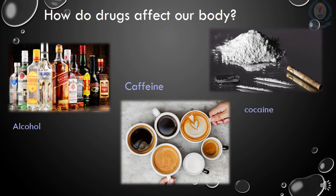Now let's see how drugs affect our body. Drugs are substances or chemicals that can change the way our body works. There are some drugs which are illegal, such as cocaine and heroin. There are another type of drugs which doctors use to diagnose, cure and treat human beings and animals. Let's discuss a few drugs and their effects.